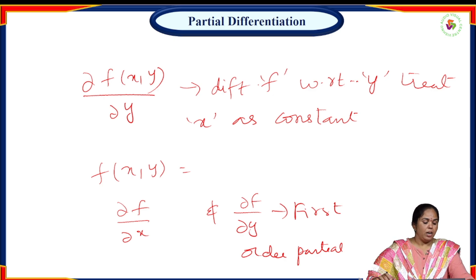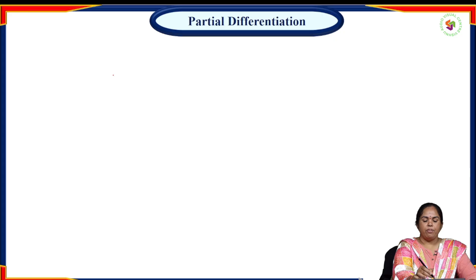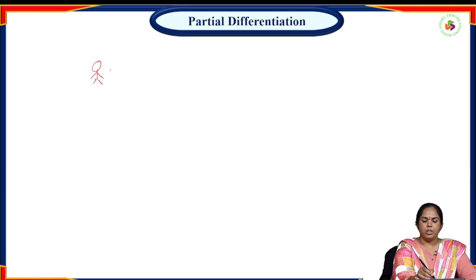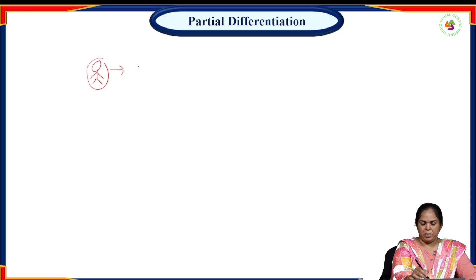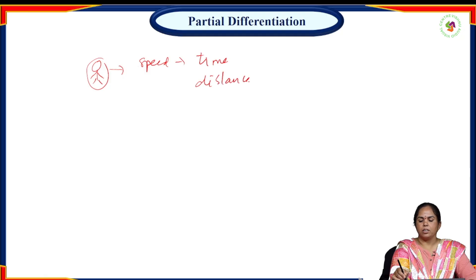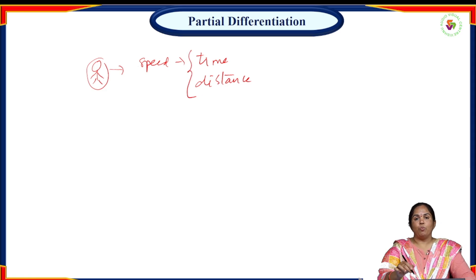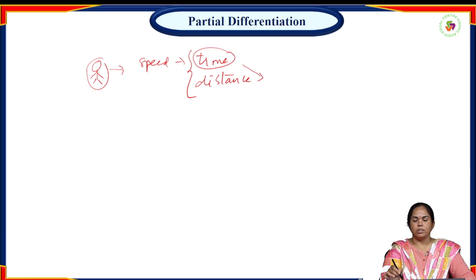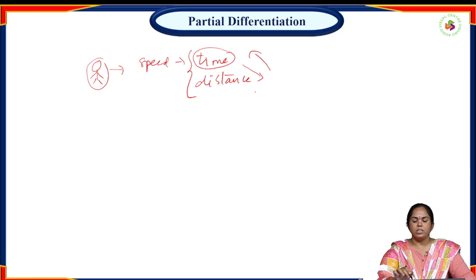We have many real-life examples of partial derivatives. They are used in physics, engineering, and even medicine. For example, if I want to find the speed of an object with respect to time and distance, here I have more than one variable.